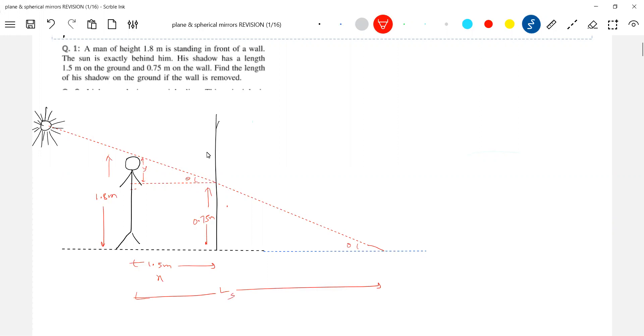Okay, what is the length of the shadow? So tan theta from the diagram, tan theta is equal to y by x, which is equal to 1.8 minus 0.75 by 1.5. So now what is tan theta? And another tan theta is equal to 1.8 by length of the shadow. So that value of tan theta we're going to substitute to get the length of the shadow.